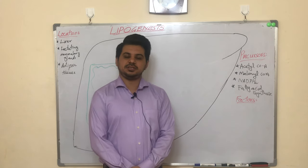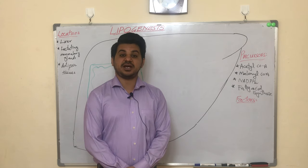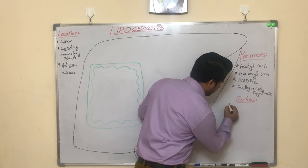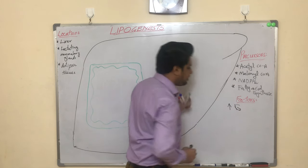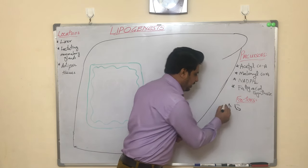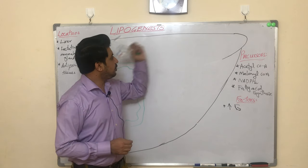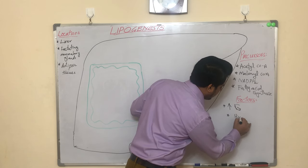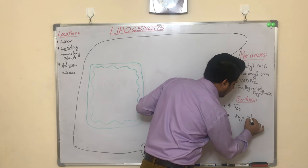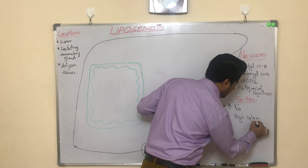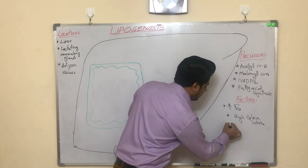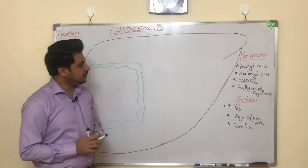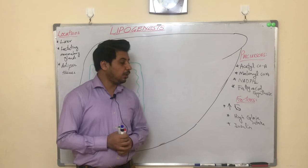What conditions trigger lipogenesis? The major factors are: number one, whenever a person is in a hyperglycemic phase, lipogenesis will start; number two, high carbohydrate or high calorie intake; and number three, insulin. These are the factors responsible for lipogenesis.